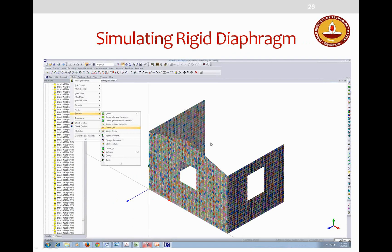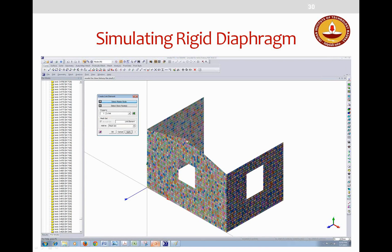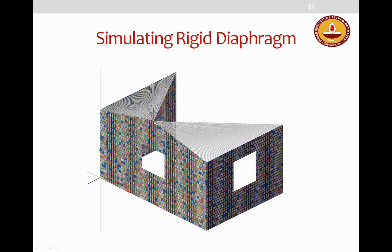To simulate rigid diaphragm action, a master-slave node connection is incorporated. After geometry and meshing are complete, the rigid diaphragm is assigned using 'Mesh > Element > Create Link.' One node is selected as master and all nodes at the top of the structure are connected to it using master-slave node connection with a rigid link element property. Applying displacement at the top gable node causes all connected nodes to move together.